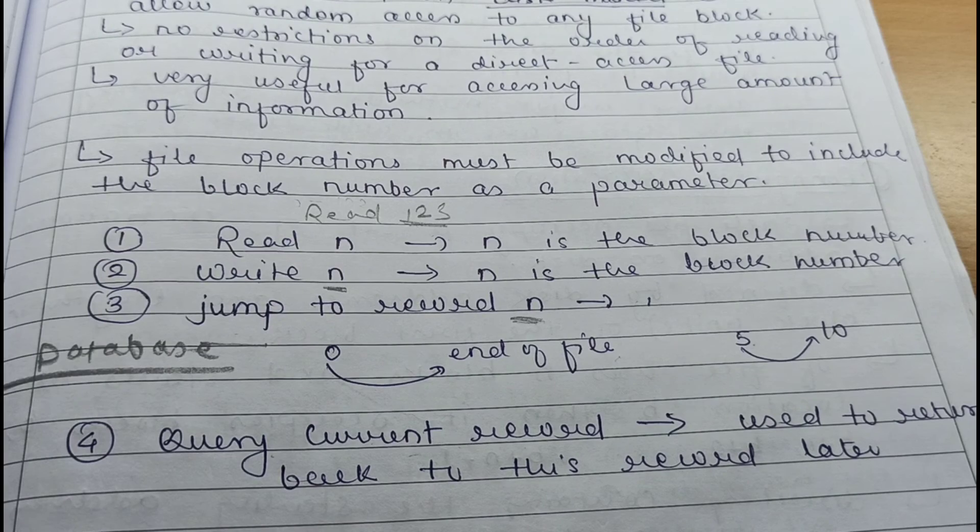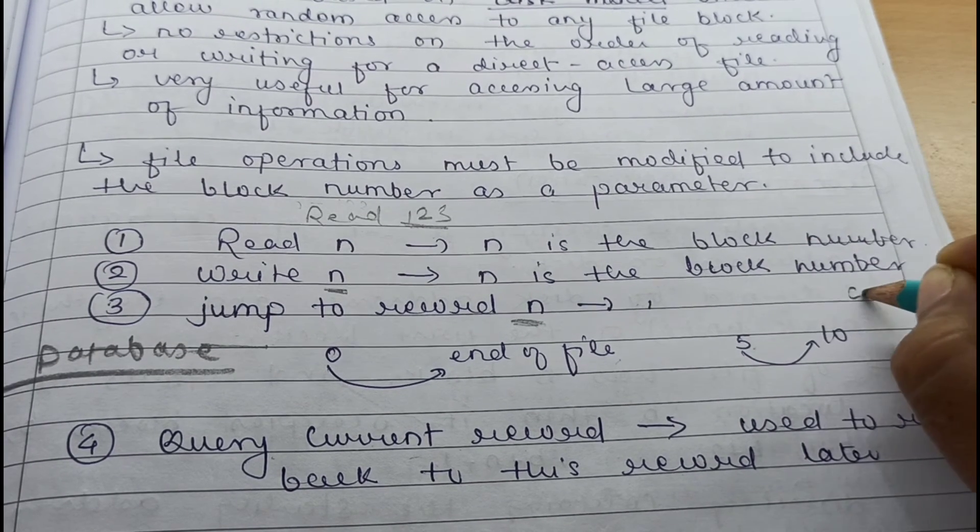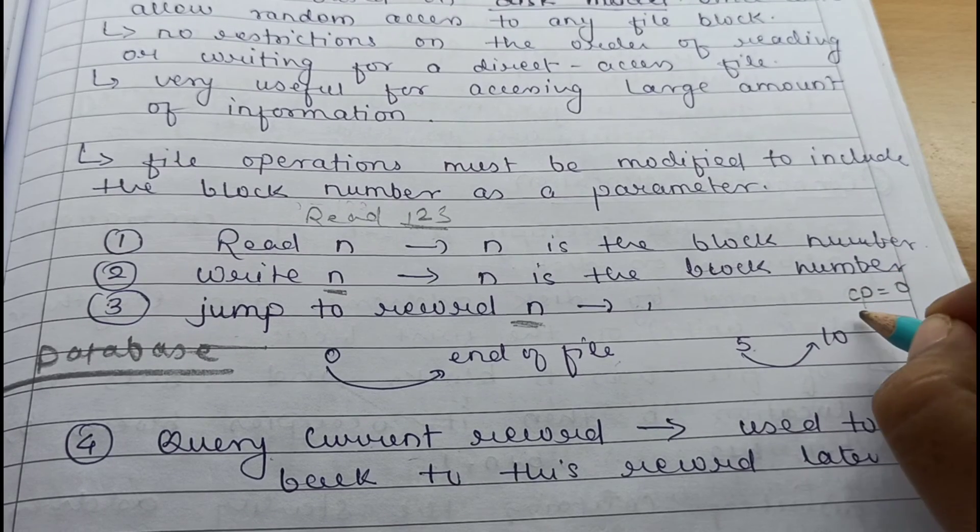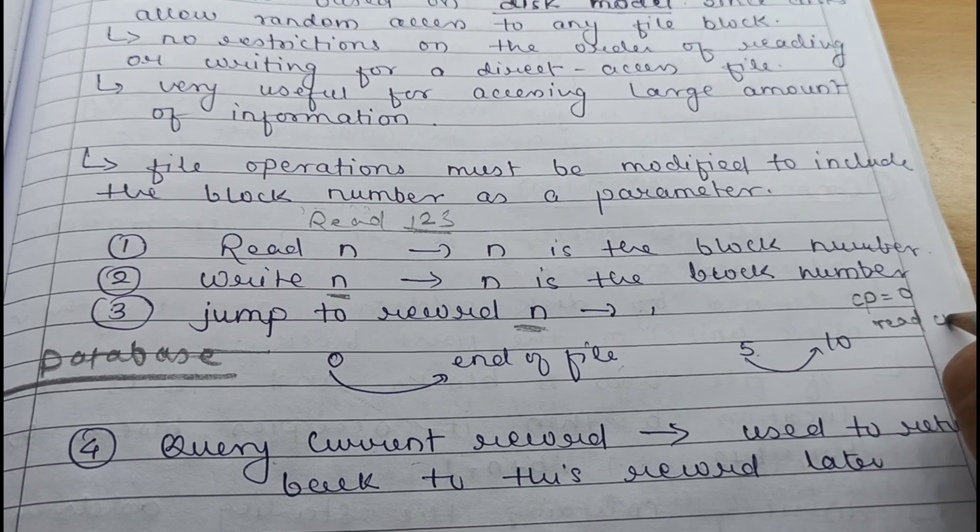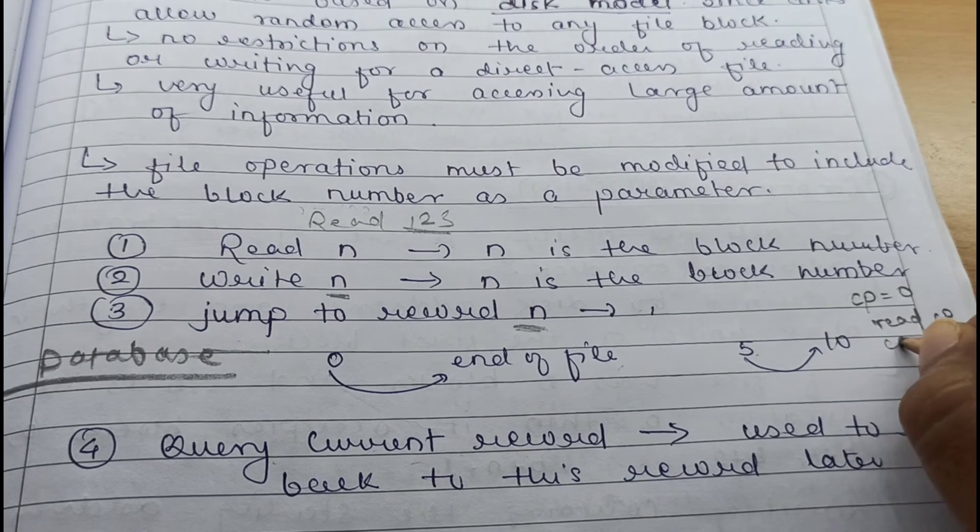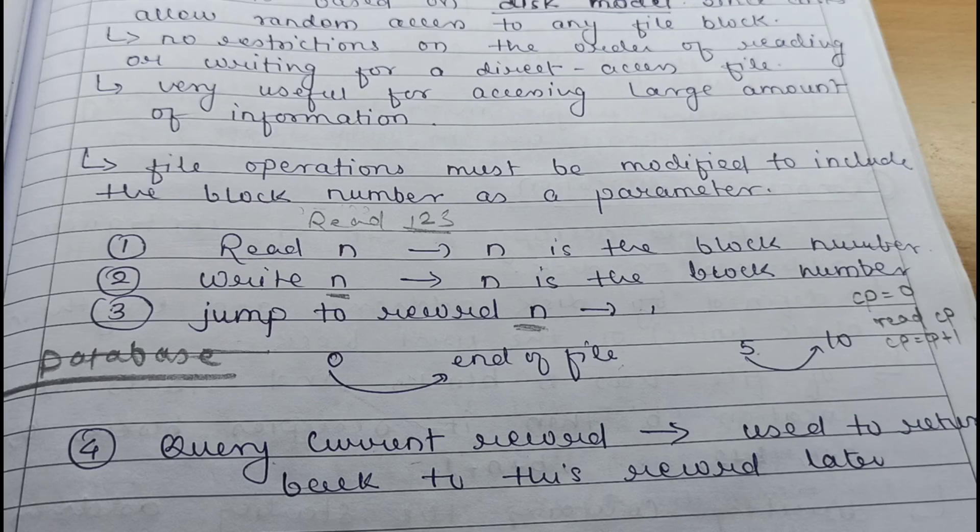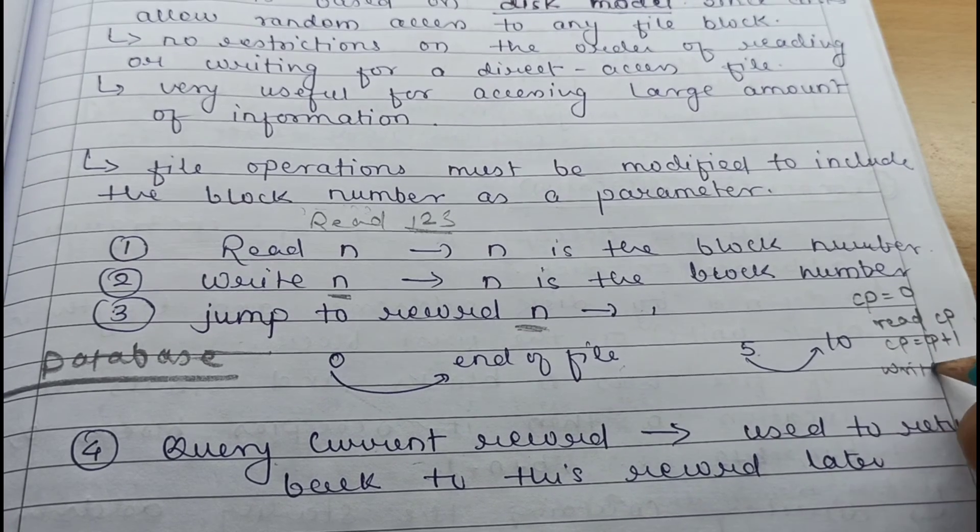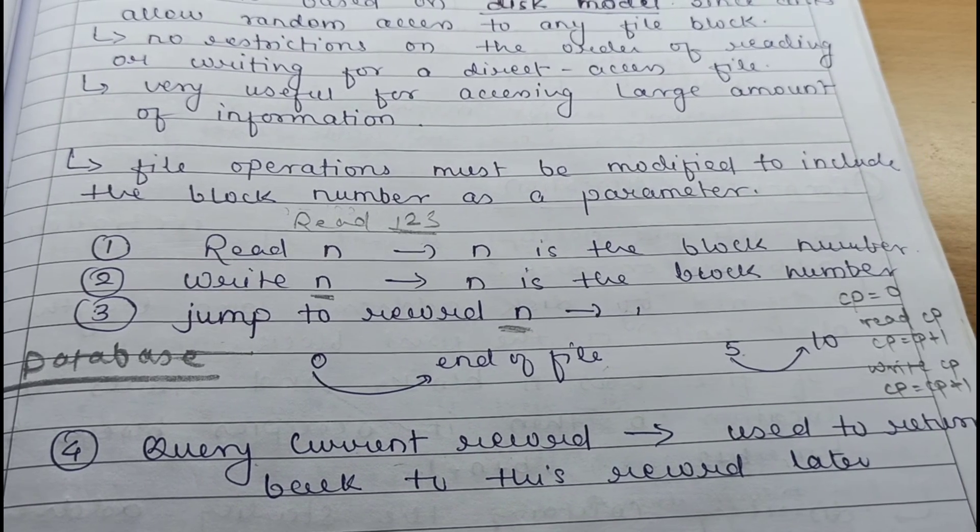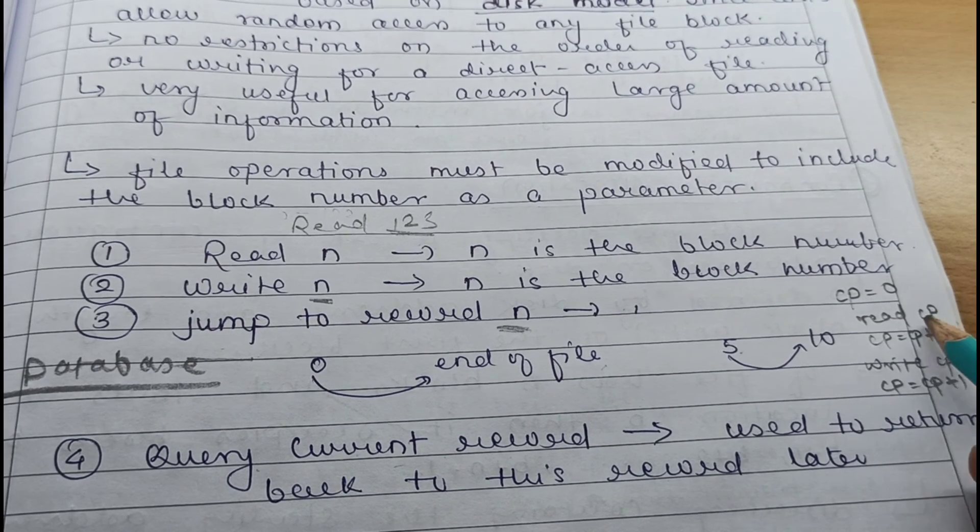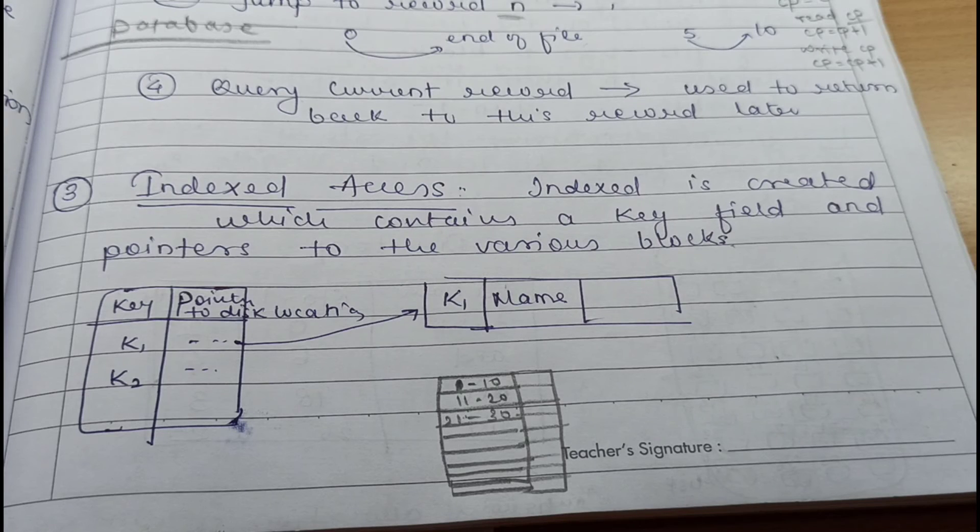Third access method is indexed sequential access. Here the access will be sequential, but what we are doing is maintaining an index of it, like stored in a book. A book has different chapters and inside a chapter there are different topics. So if you want to go to a particular topic, you can directly find out that topic, then get the page number, and directly go to that particular page number.